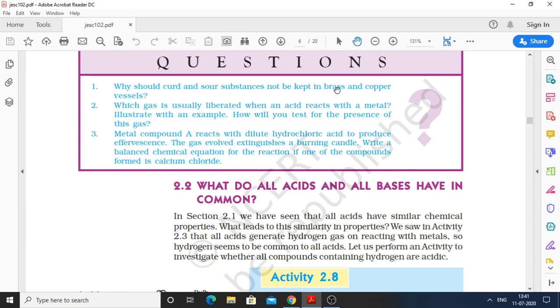You can say because there is some acid present in this curd and sour substances. This acid will react with the metal that the vessel is made of. Brass is made of copper and zinc. Brass contains both copper and zinc. Copper vessel also has copper. These metals will react with the acid. When metal reacts with acid, what happens? Salt plus hydrogen gas forms. This will cause your food item to spoil. There will be a chemical composition change, a chemical reaction. The substance will change into some other substance. Your sour substance will be changed. Clear?